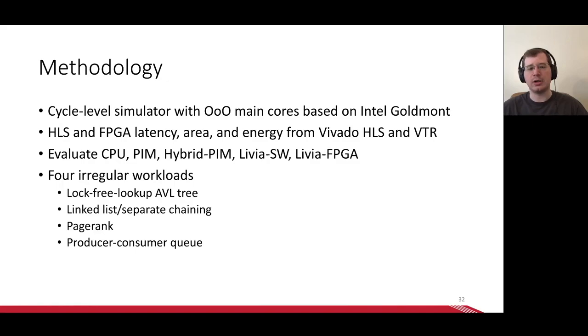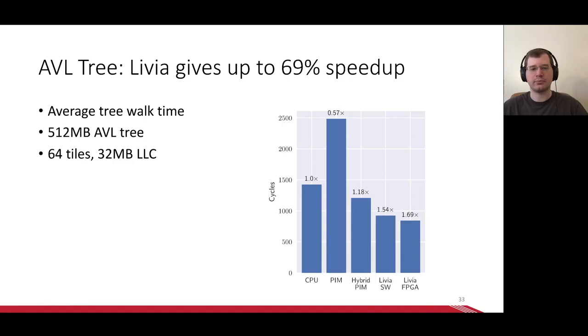We implemented four irregular workloads as memory services: a lock-free AVL tree, which is similar to the search tree we saw in the motivation; a linked list benchmark that models a hash table implemented with separate chaining; a graph application page rank; and a producer consumer queue, which is often used as a primitive in multi-threaded applications. In this talk, I'm going to focus on the AVL tree since we've already seen how it works in detail.